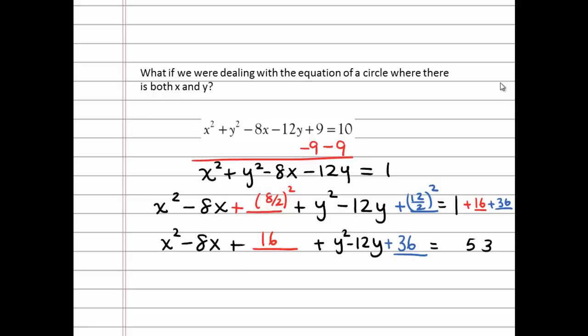So once again, I take half of my b values and I square them. And then I make sure to add that to the right-hand side of my equation.